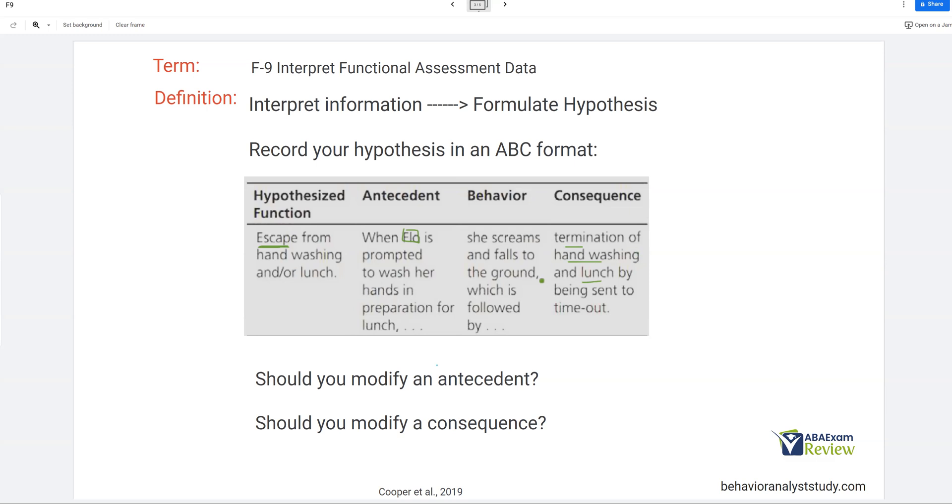And so when you write it out like this, one, it's easy to see what happens right before and right after. And then you can start to ask yourself, do I want to modify the antecedent? Is it going to be easier to modify how her hands are washed or how she prepares for lunch? Or should we modify the consequence? Should we just prevent the escape and continue doing what we're doing over here? Or maybe we modify both. When you put it this way, it's a very clear picture of function, of antecedent, and of consequence. And you can start formulating that clear hypothesis.